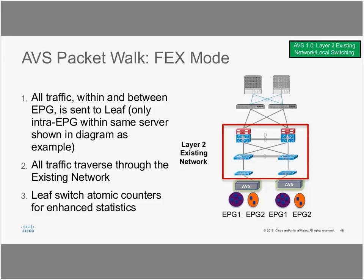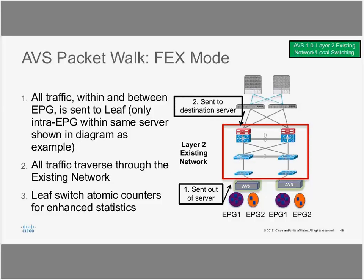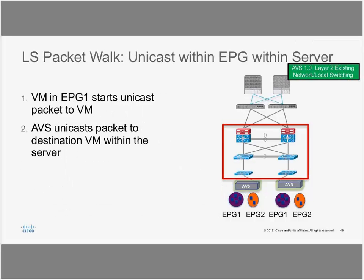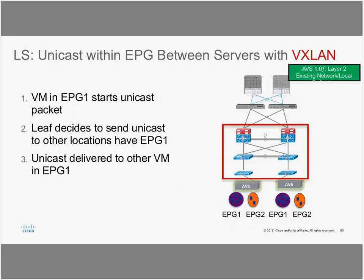In fabric mode, EPG traffic — whether within or outside the EPG — must contact the leaf, which defeats the purpose of local switching. In local switching mode, intra-EPG traffic stays on the same host. In the upcoming full switching mode, any EPG-to-EPG traffic will stay within the hypervisor. For a packet walkthrough in fabric mode: two EPGs talking means traffic goes to the leaf and comes back — traversing your existing network. In local switching mode, intra-EPG unicast stays on the AVS without reaching your core.